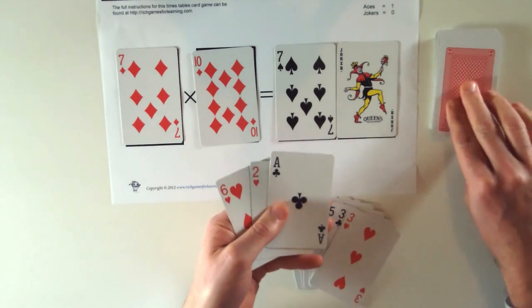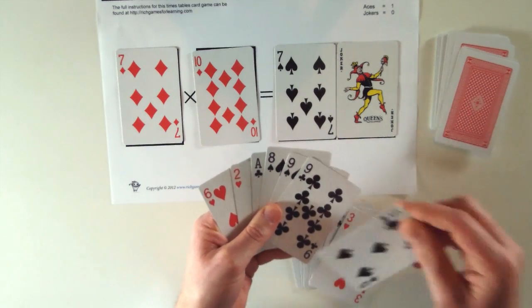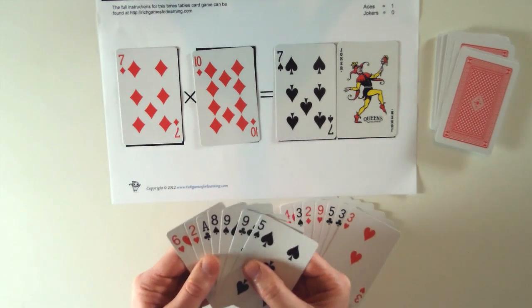Now because I've used four cards, that player instantly picks four more cards up. So they're always holding seven cards in their hand.